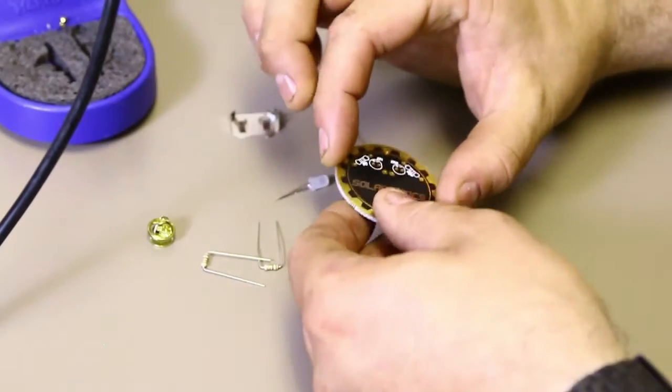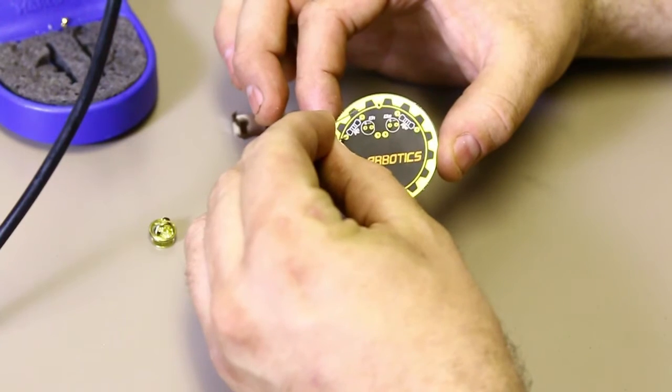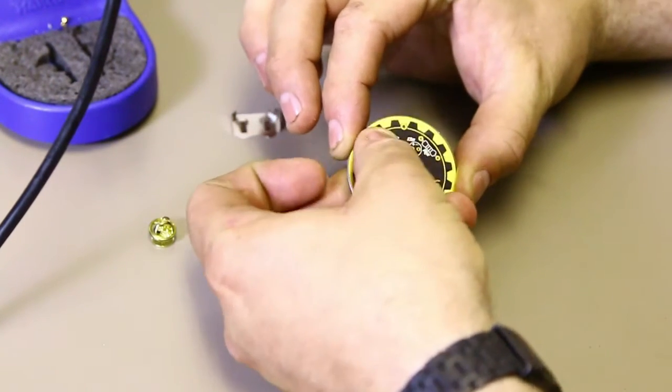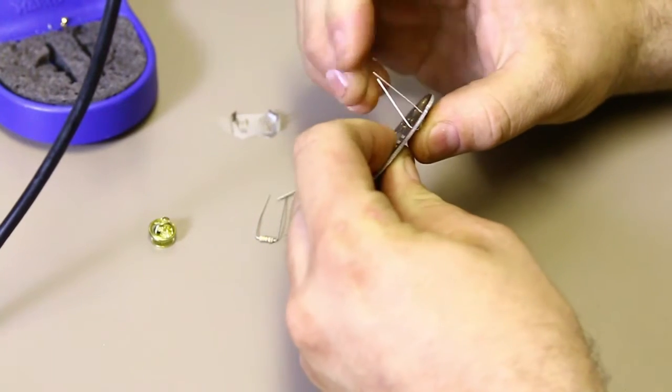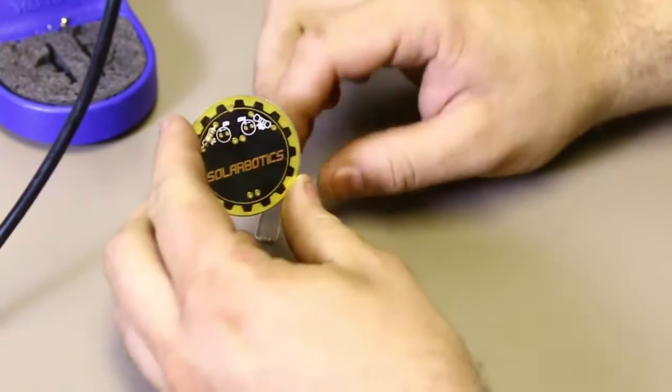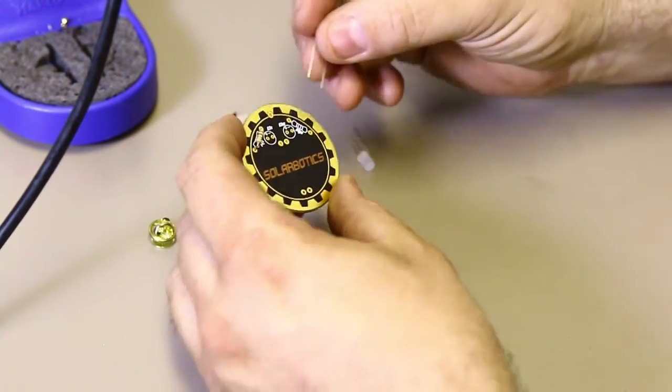We will start by inserting the resistor. The nice thing is that resistors are not polarity-specific, so you can insert them either direction. Once you press them in all the way, flip that over and spread the legs a little bit so that the resistor does not fall out. This will make it easier when you're clipping the leads and when you flip it upside down and put it into the helping hands.